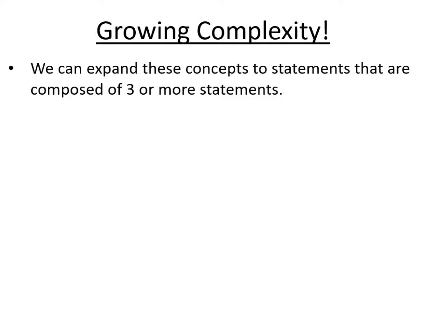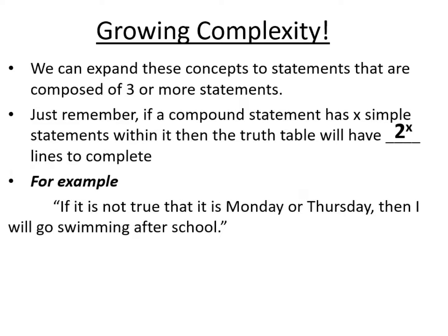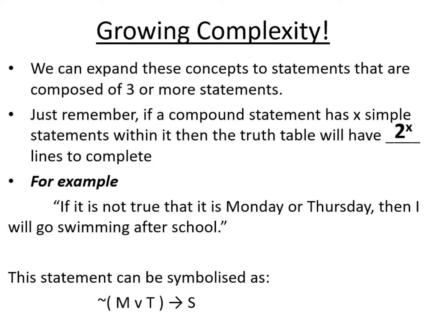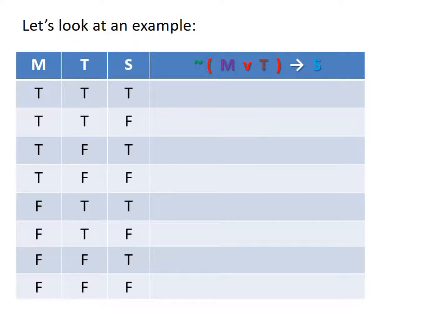From here we can expand to statements that have three or more simple statements. As long as we remember that if the compound statement has X simple statements, then the truth table will have two to the power of X lines. For example: if it is not true that it is Monday or Thursday, then I will go swimming after school — symbolized as: if not (M or T), then S. With three simple statements, the truth table will have eight lines.